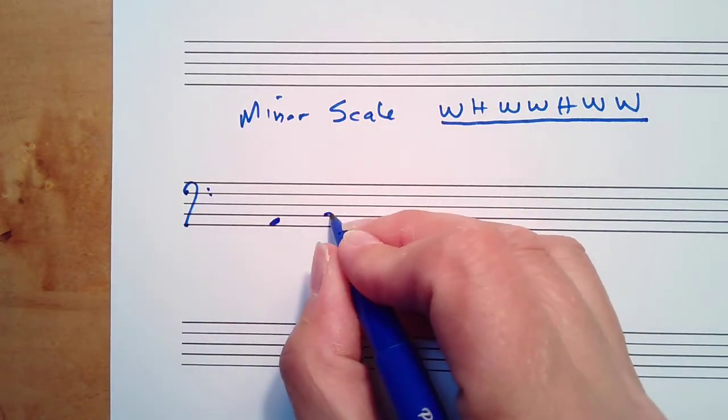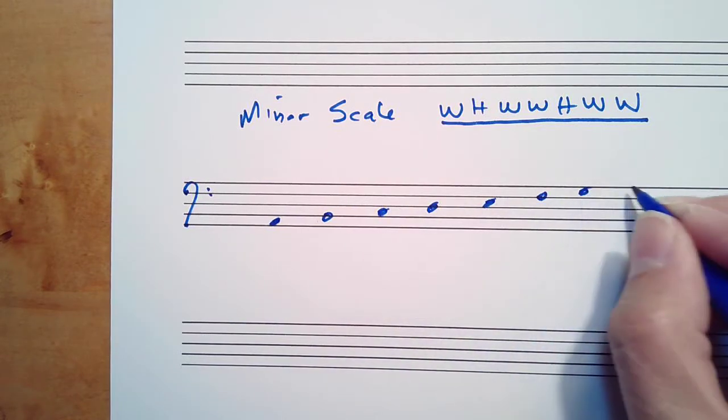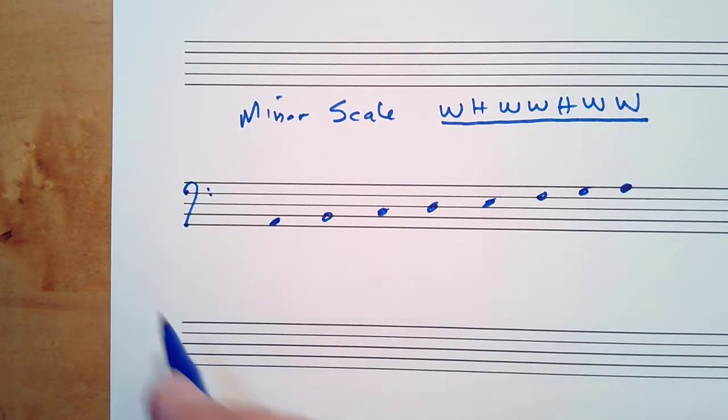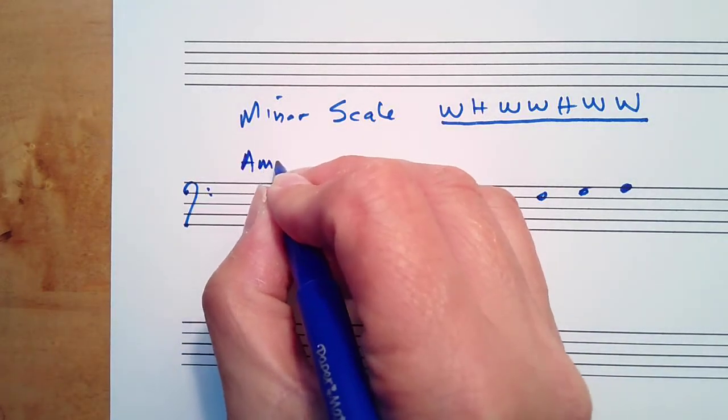If you start on A and stick with notes that are not sharp or flat, you go A, B, C, D, E, F, G. This automatically gives you the A minor scale.